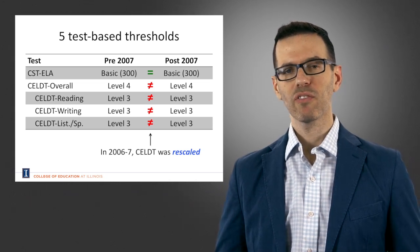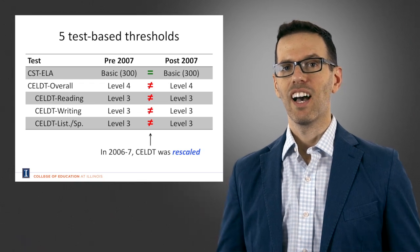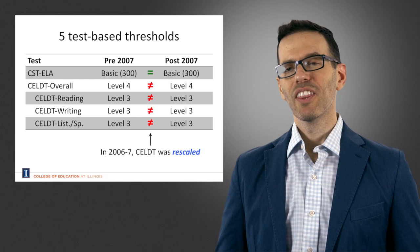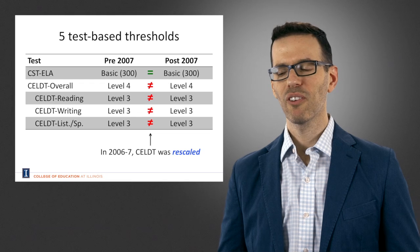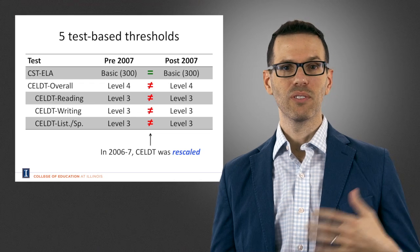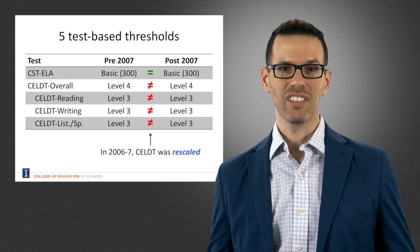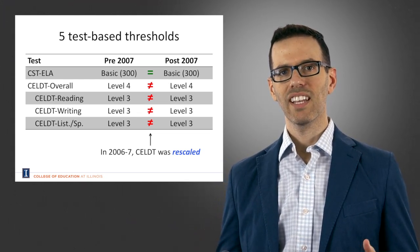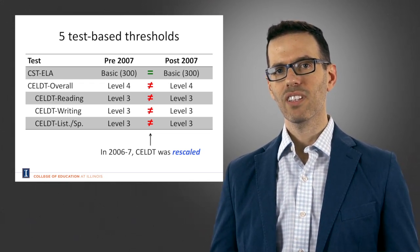What we see here are the five different test-based thresholds that students need to pass in order to be reclassified, or to be eligible for reclassification. There are a bunch of acronyms here. The first is the California Standards Test of English Language Arts. The other tests labeled CELT stand for the California English Language Development Test — those are all tests given specifically to English language learners, whereas the CST-ELA is given to all students.